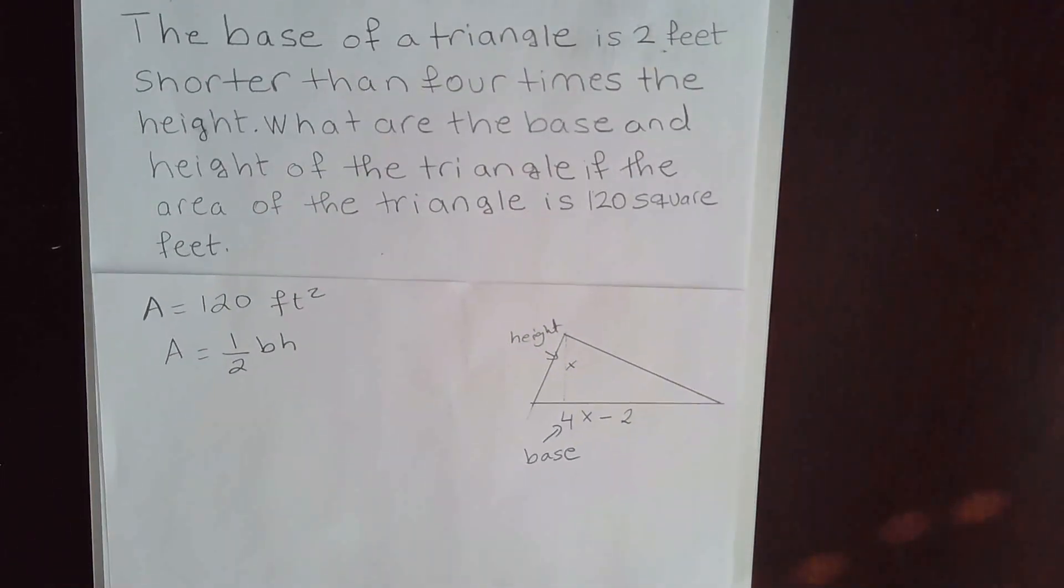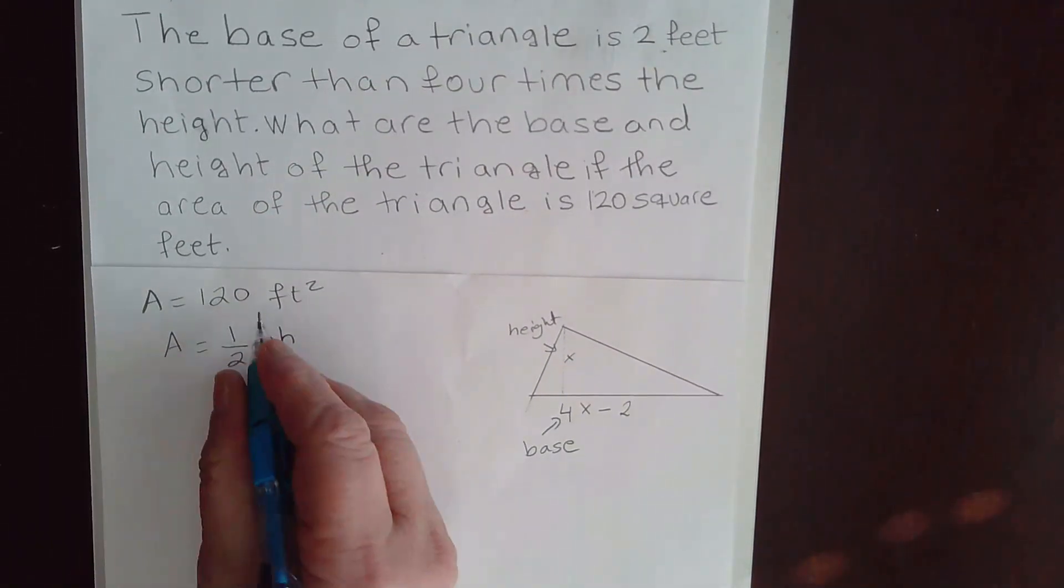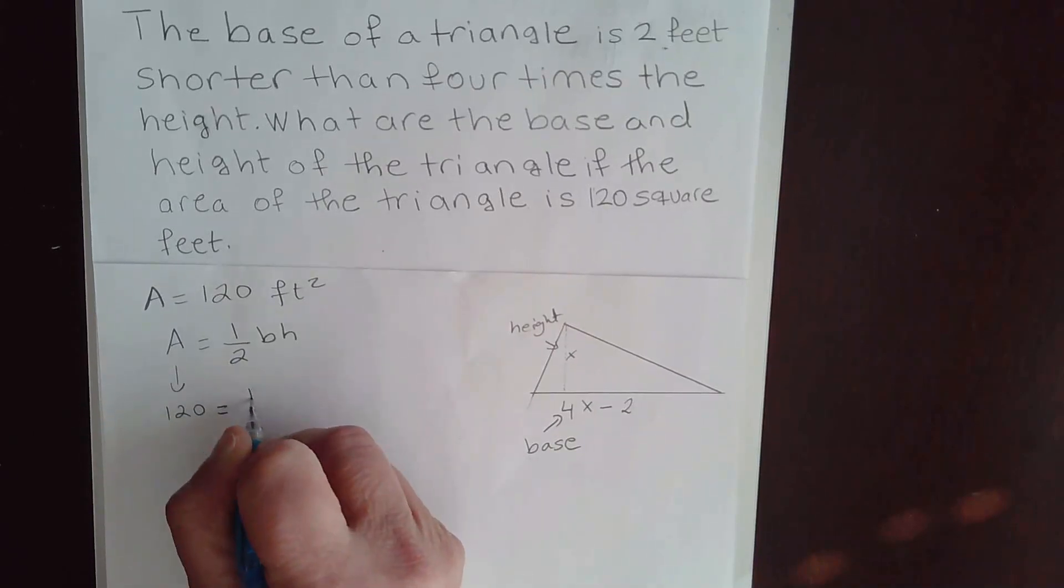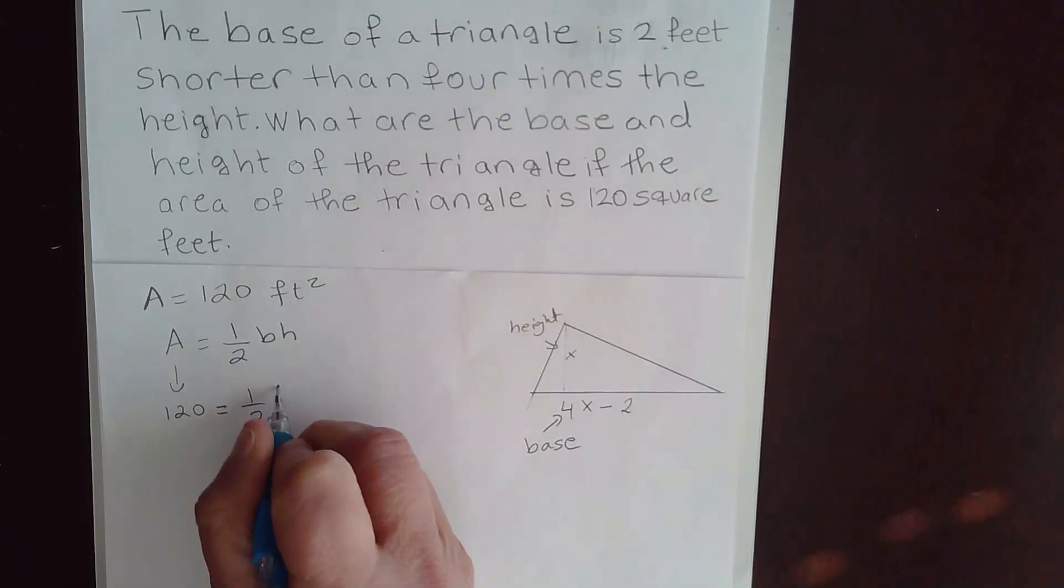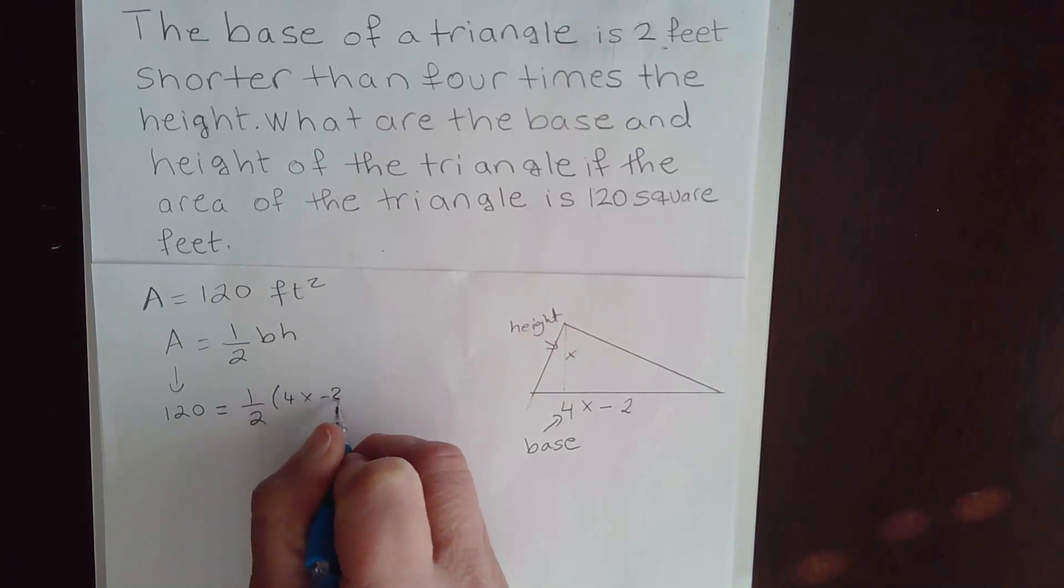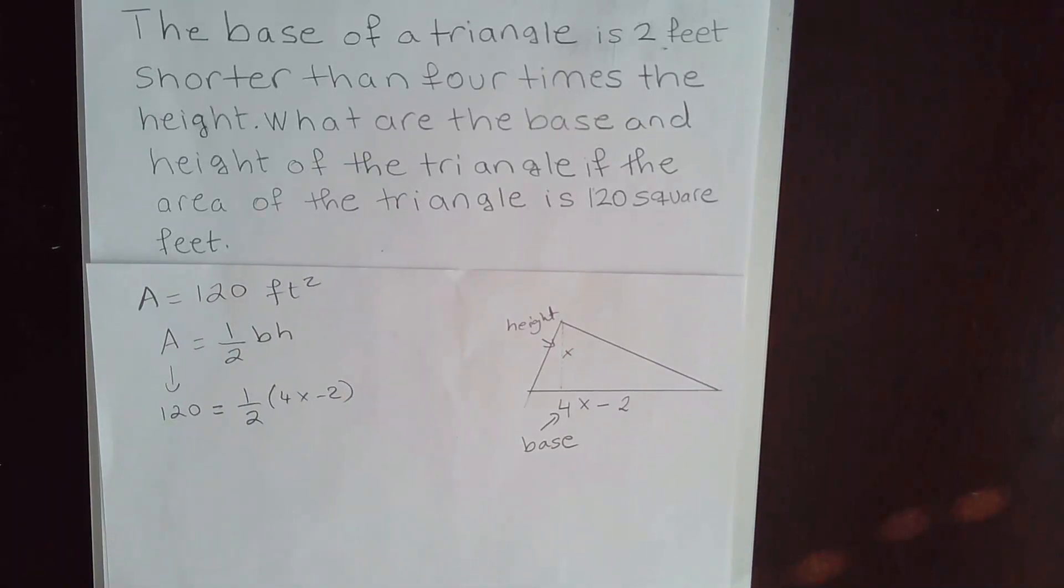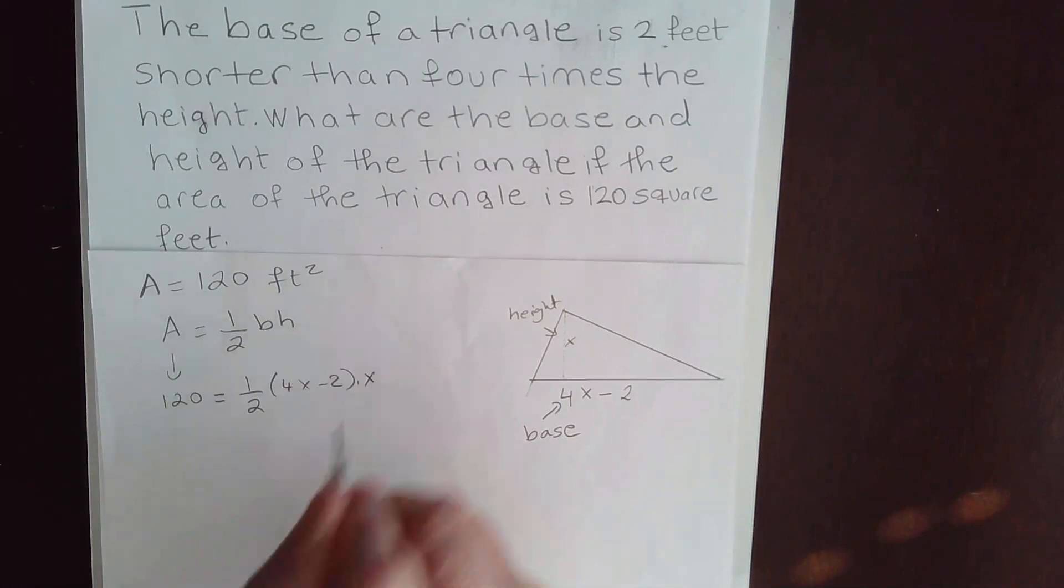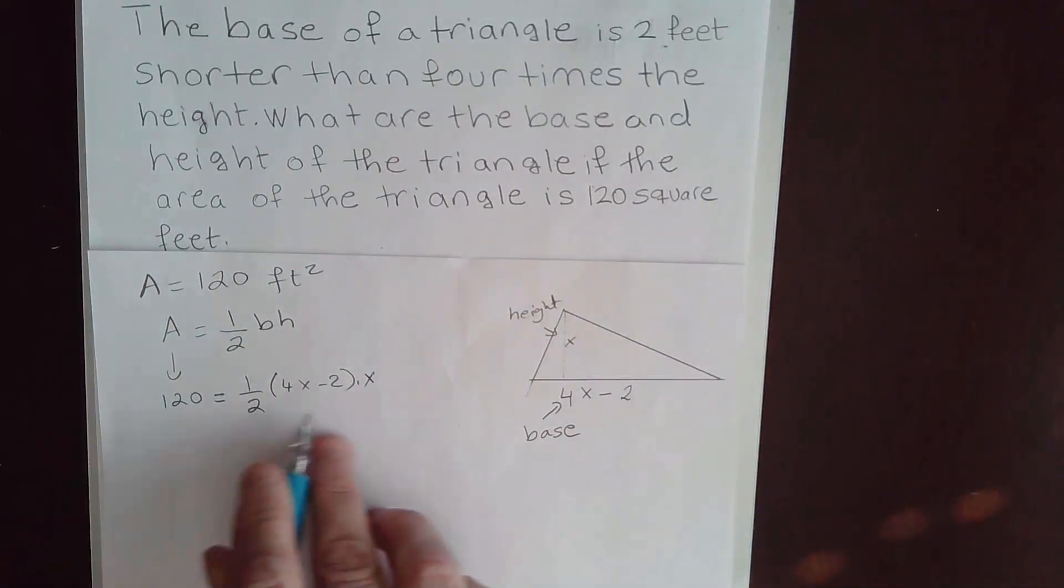Okay, so the area is 120 equal to one half. The base is 4X minus 2. That's your base. The height is X times X. So here's my equation.